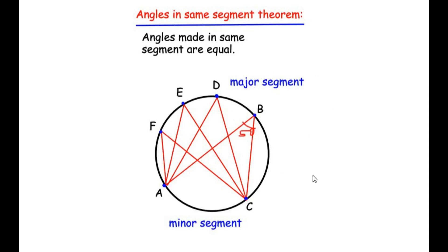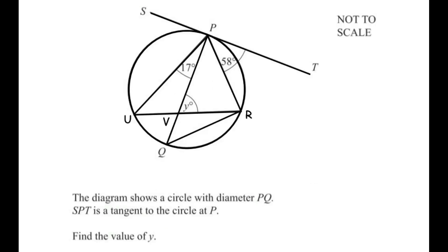Now let us use these three theorems to solve the example. In the figure, I have labeled a few points: U, V, and R. Beginning with the radius-tangent theorem — also called the diameter-tangent theorem — PQ is a diameter and the tangent SPT touches the circle at point P. So angle QPT is 90 degrees. Since angle RPT is given as 58 degrees, we can find angle QPR: 90 minus 58 gives us 32 degrees.